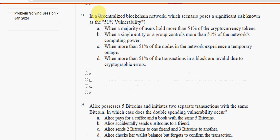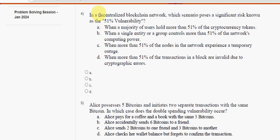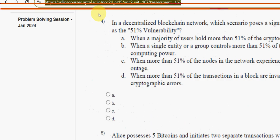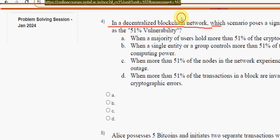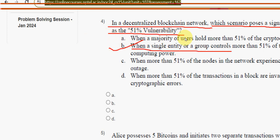Fourth question: in a decentralized blockchain network, which scenario poses a significant risk known as the 51% vulnerability? The answer is option B — when a single entity or group controls more than 51% of the network's computing power. Mark option B.